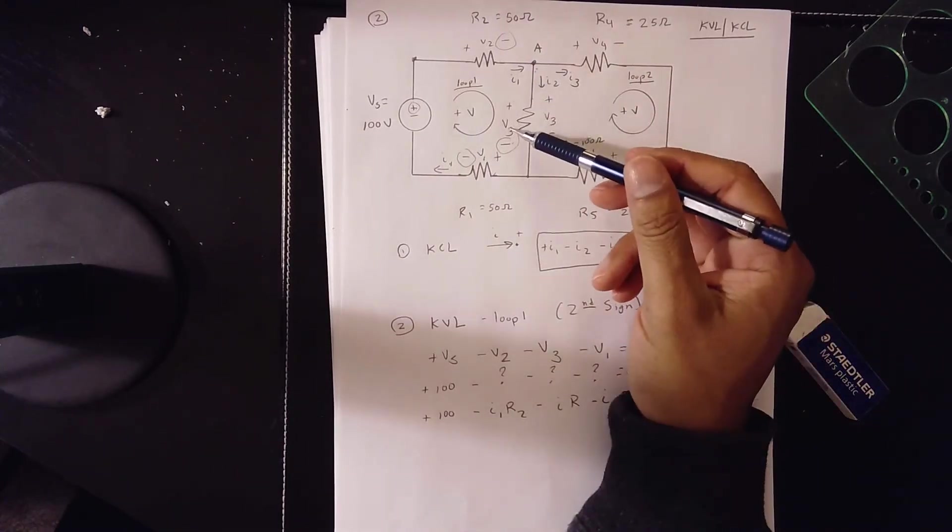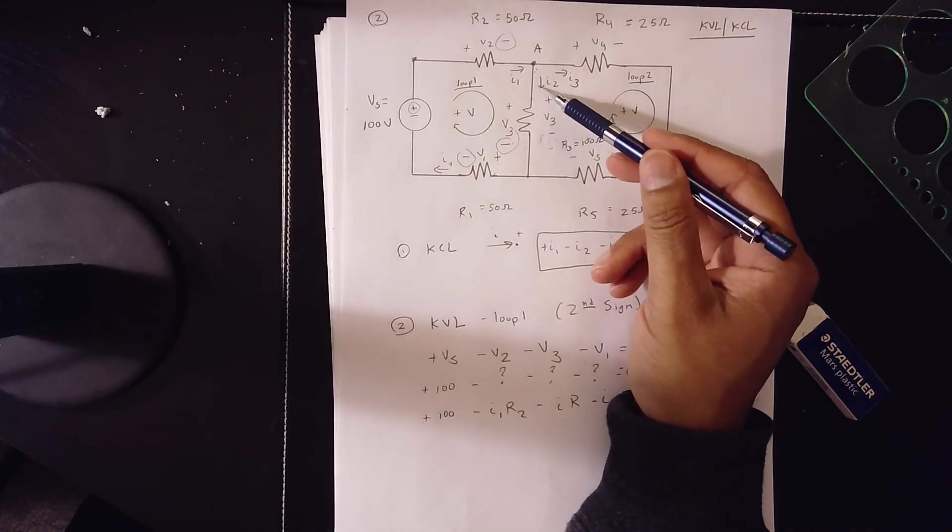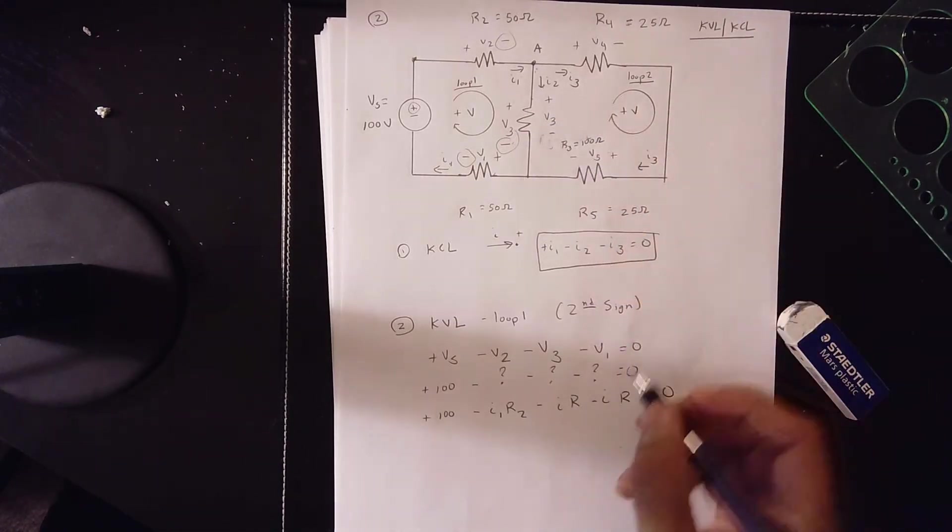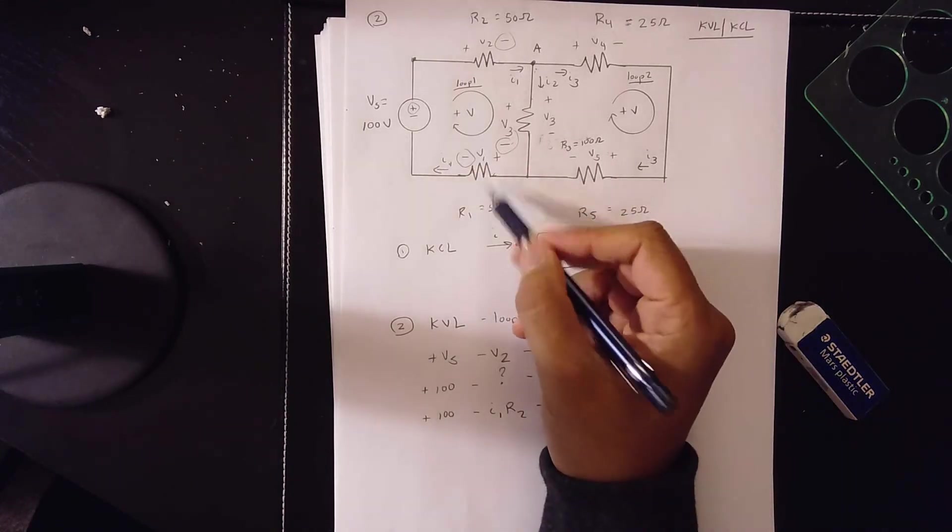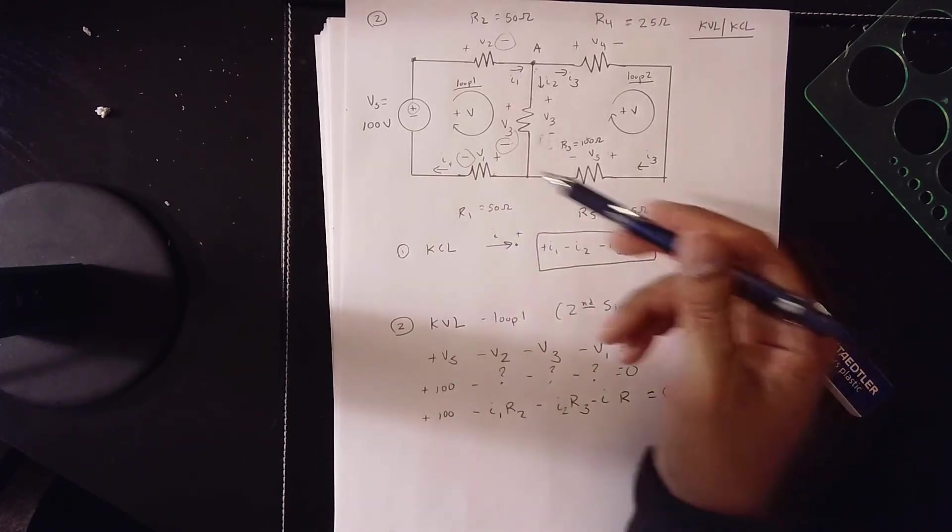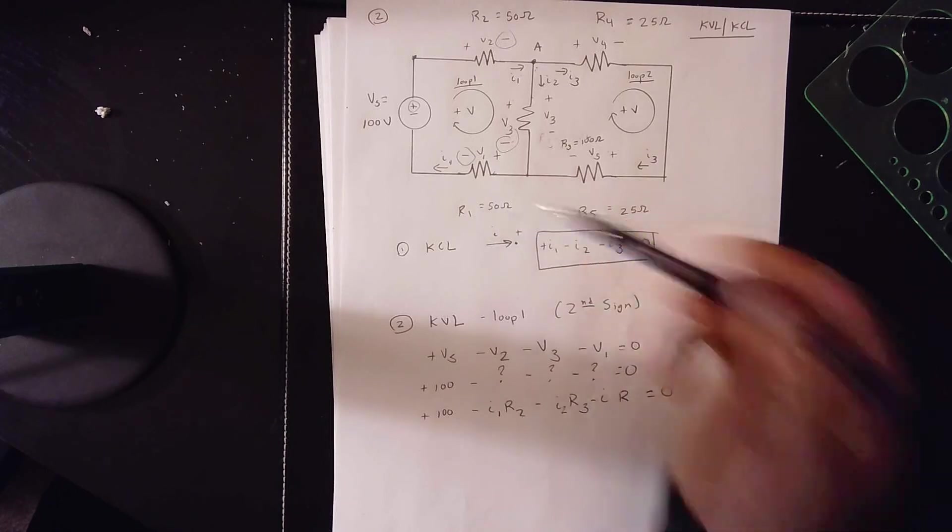V2 is here. I1, R2. V3 is here. I2, R3. V1 is here. V1 is here. I1, R1.